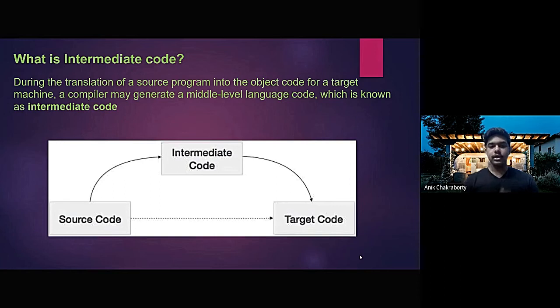Like we can see in the diagram, the source code can be directly converted to the target code but instead of doing that, we first convert it into an intermediate code which is easy to understand for the system and then we convert it into the target code.